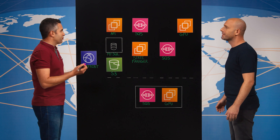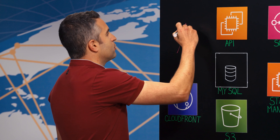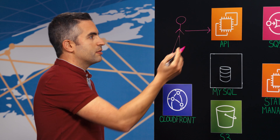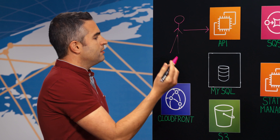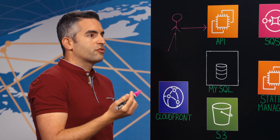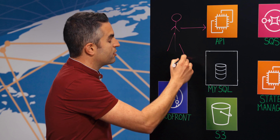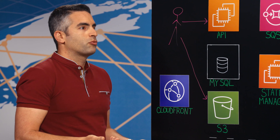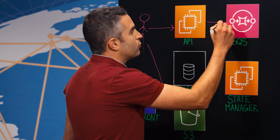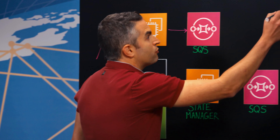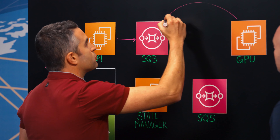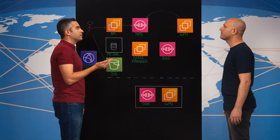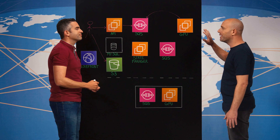Let's dive into the architecture. When our user wants to animate his photo, he reaches our API server, which is deployed on an EC2 instance. At this point, we generate a pre-signed S3 URL, which the user uses directly to upload his image to S3. From there, the animation process starts. We generate a request to SQS, and our GPU fleet of EC2 instances consume this message from the queue and do the hard work of animating the image using deep learning techniques. This is where all the magic happens.